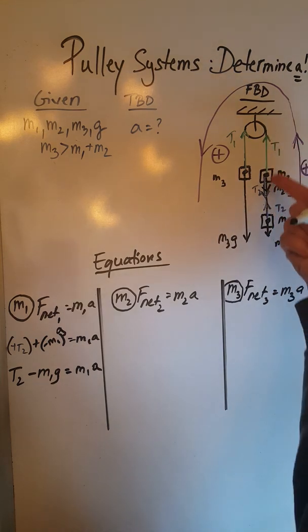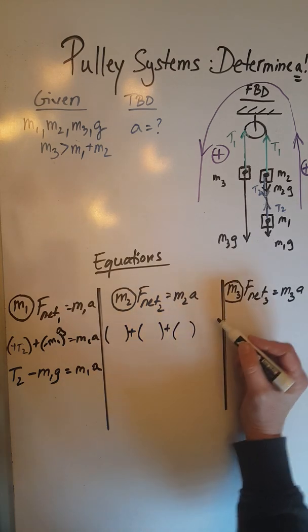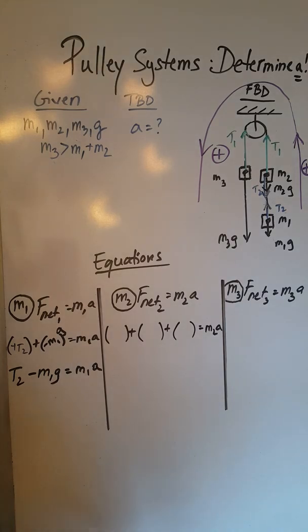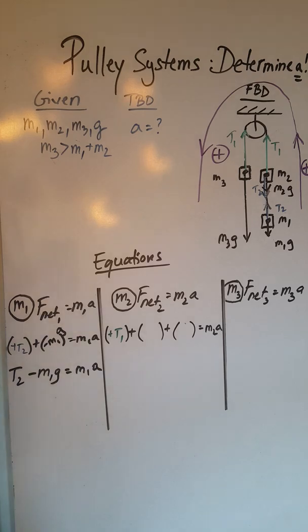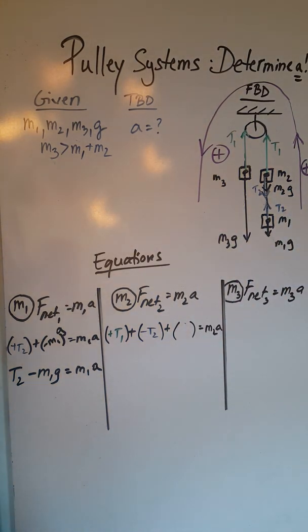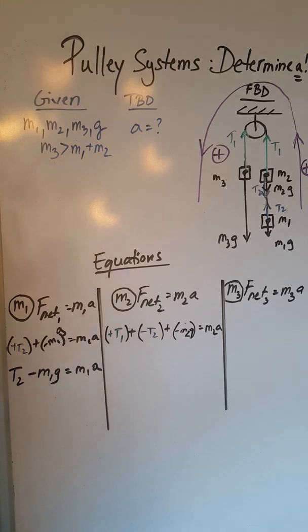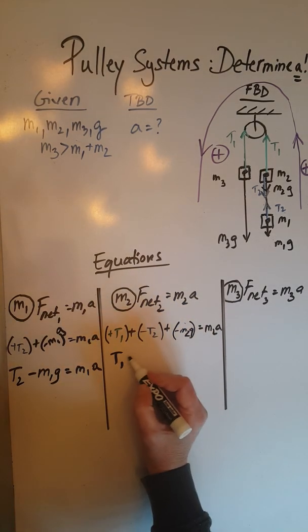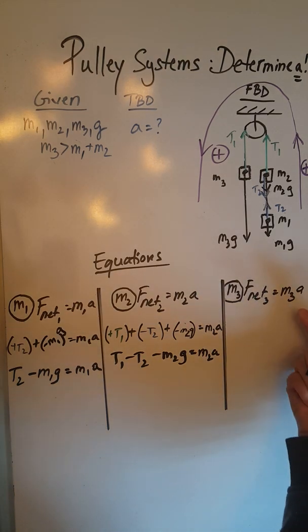For the second object, we have three forces—one is positive, two are negative—so we're going to have a vector sum of three forces equals M2A. The three forces are positive T1 over there color-coded in green, and then two negative forces: T2 is negative, so negative T2 in blue, and so is M2G negative in black. Simplifying this gives us T1 minus T2 minus M2G equals M2A.